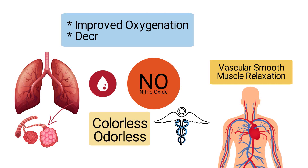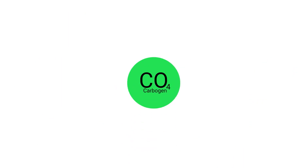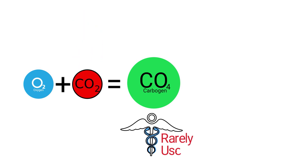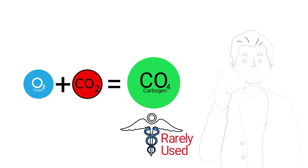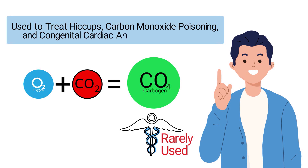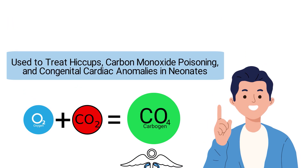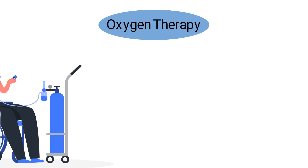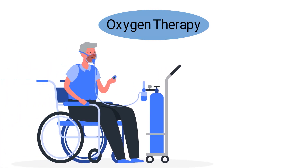Nitric oxide helps improve blood flow to ventilated alveoli, which results in improved oxygenation and decreased shunting. Carbogen is a mixture of oxygen and carbon dioxide and is a medical gas that is rarely used today. However, this gas has previously been used to treat hiccups, carbon monoxide poisoning, and congenital cardiac anomalies in neonates.